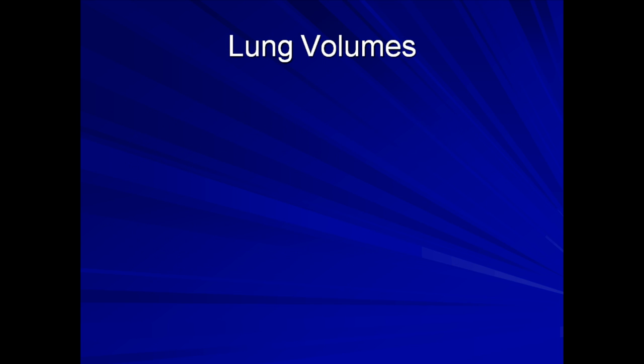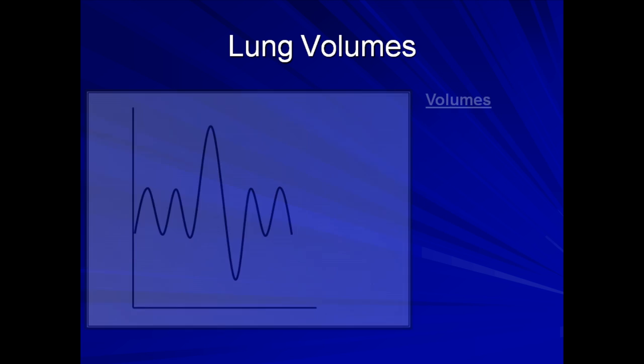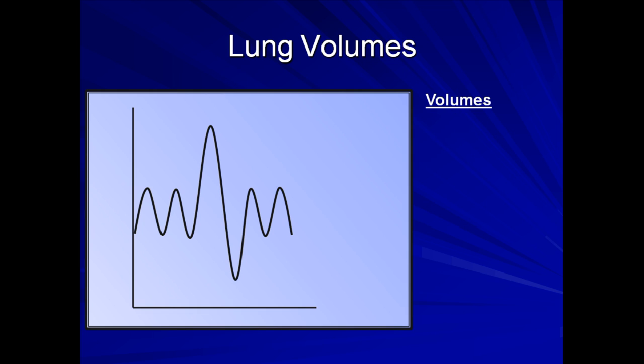The first physiologic principle to discuss is the definition of some important lung volumes. Here we have a graph of lung volume as a function of time. Each undulation in the curve represents a breath in a spontaneously breathing patient. Most breaths are relatively shallow and constant, consistent with a normal respiratory pattern in a healthy person. The volume of gas cycled with each normal breath, or the amplitude of this curve, is termed the tidal volume. It is approximately 500 milliliters in an average-sized adult.